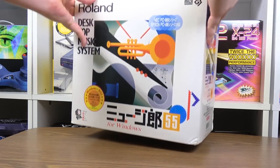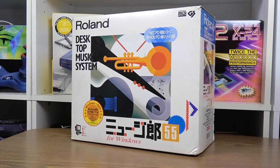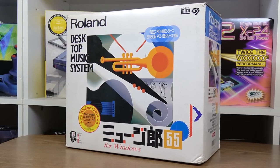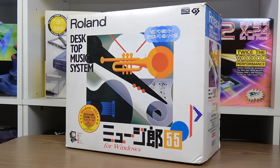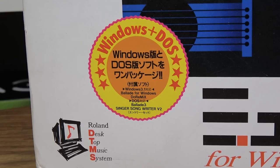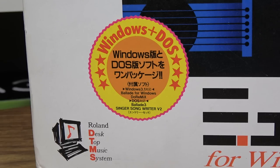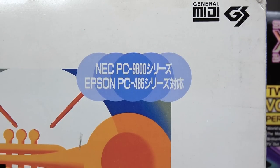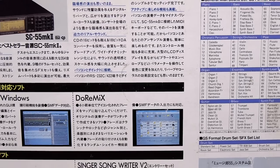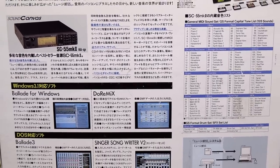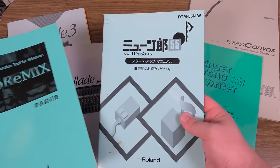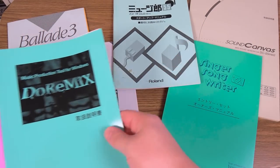In fact, Roland was embracing computer users wholeheartedly with the SC-55 Mark II, releasing the module in kits like this desktop music system from Japan. This was designed to work with Windows and DOS software across a variety of personal computers from NEC and Epson models to generic IBM PC compatibles. Being aimed at musicians, it came with all sorts of software for music composition and audio manipulation, along with plenty of colorful documentation alongside.